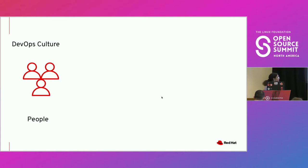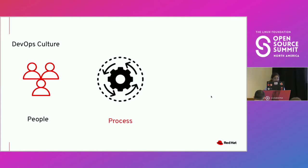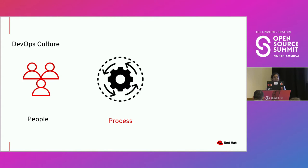The second pillar is the process. In every aspect of your DevOps lifecycle, there are a bunch of workflows and processes taking place. You're also trying to figure out what is the most effective way to have these processes built in, and what are some effective ways you can automate some of these workflows. That is one of the major components involved in this entire lifecycle.